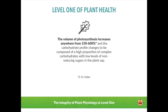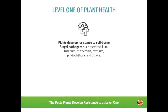Once we have a plant that is photosynthesizing really well — with high volumes of sugar production and good quality carbohydrates — plants seem to become much more resistant to all soil-borne fungal pathogens, particularly rhizoctonia, verticillium, pythium, fusarium, and also phytophthora. Phytophthora isn't technically a fungal pathogen, being an oo spore, but we also see observed resistance to phytophthora at this level. There are a number of different hypotheses about how this effect might be working.